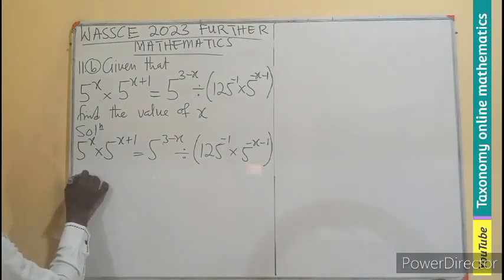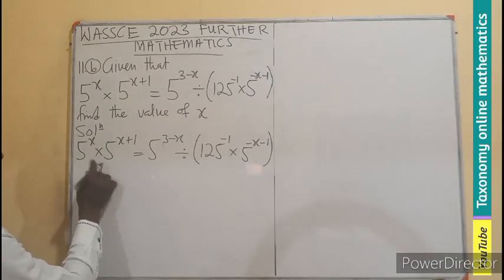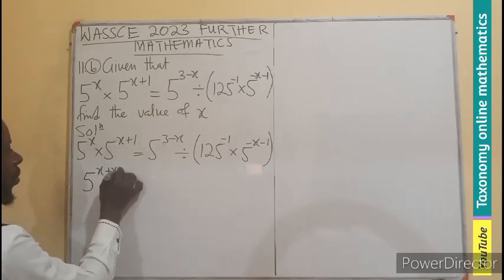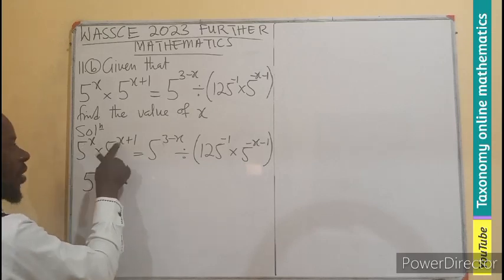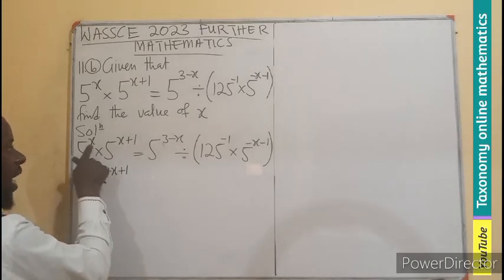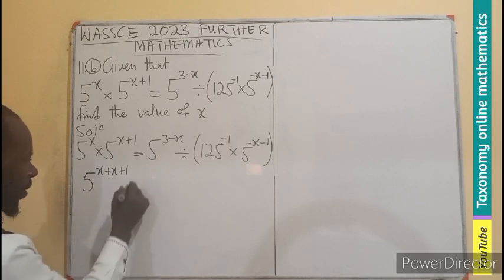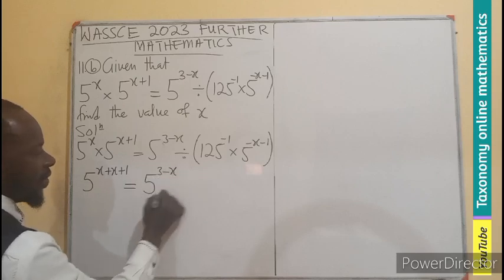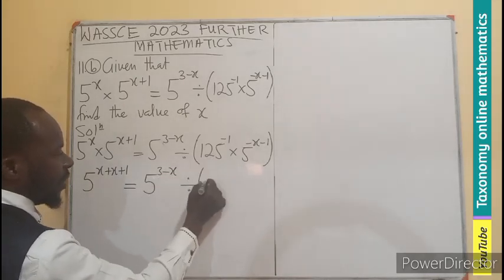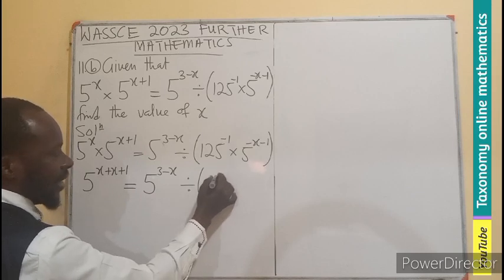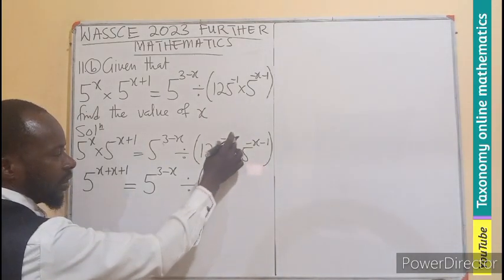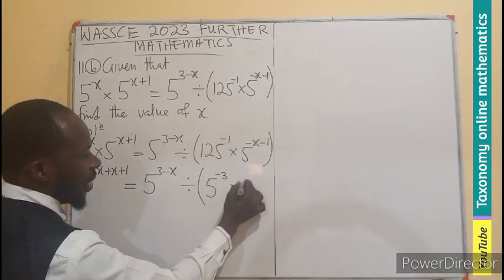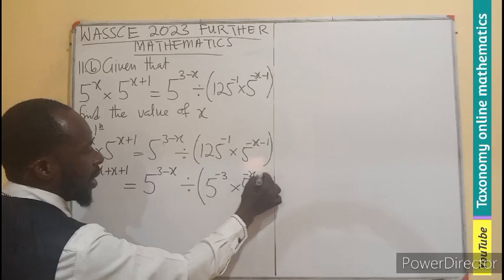So right away, this becomes 5 exponent of x plus x plus 1. Don't forget the first exponent plus the second exponent. And I have the 2 of the x, so it will be featured here. Then equals to 5 exponent 3 minus x divided by, in this bracket, this becomes 5 exponent 3. And it already has a negative 1. So the exponent 3 will multiply the negative 1 to give you negative 3 times 5 exponent negative x minus 1.